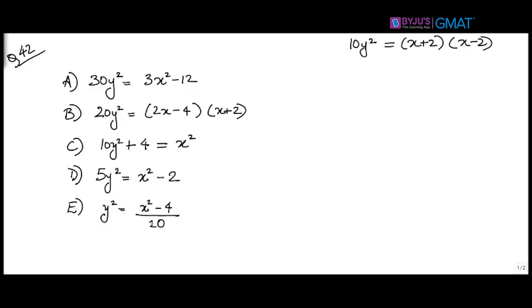Take values! Let's take a value for x that makes the math easy. Let's say x = 2. If x is 2, clearly y = 0. Now put x = 2 into each answer option — whichever gives y = 0 goes out, because we are looking for the expression that is not satisfying.